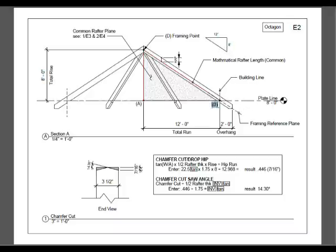Between point B and point D, this is our mathematical rafter length for the common rafter. This is along the framing reference plane. Height above plate line, in our example, this will be 7 inches.